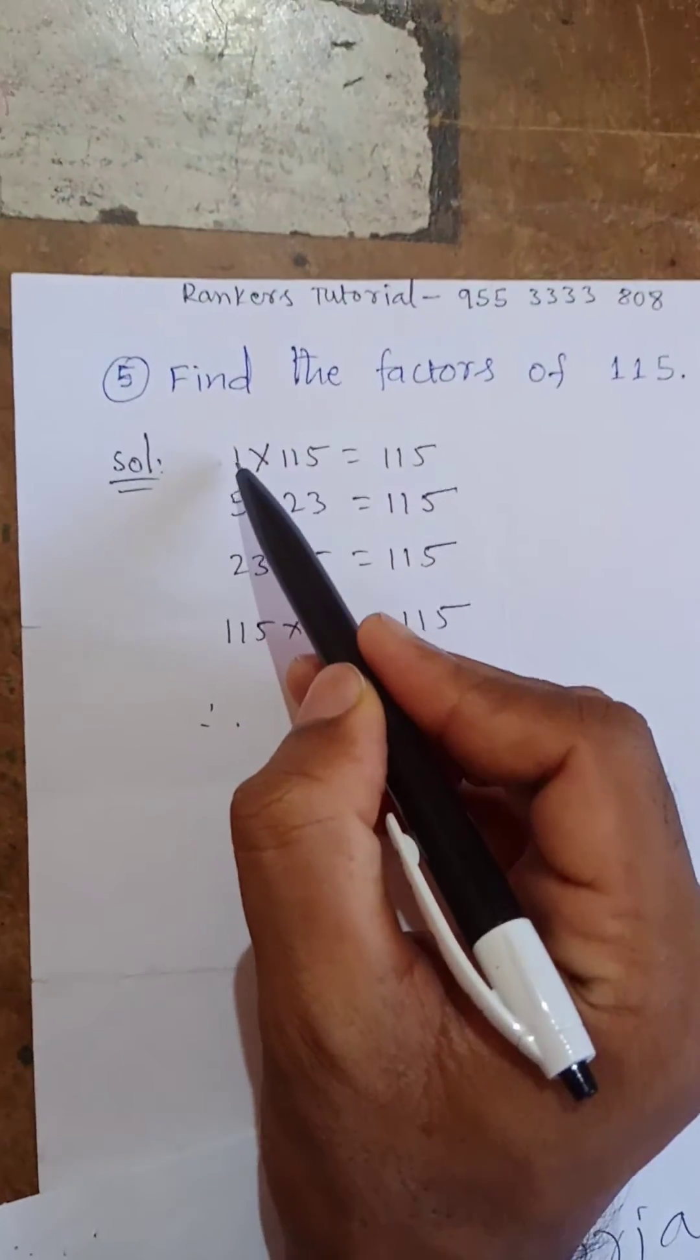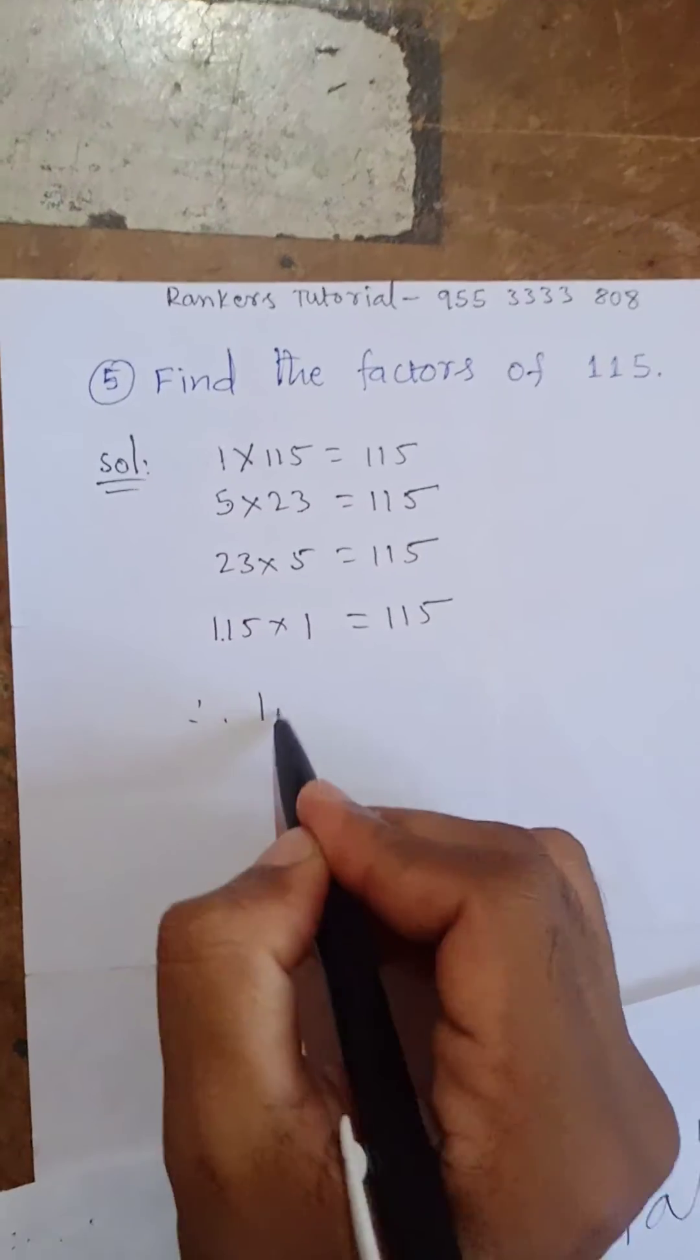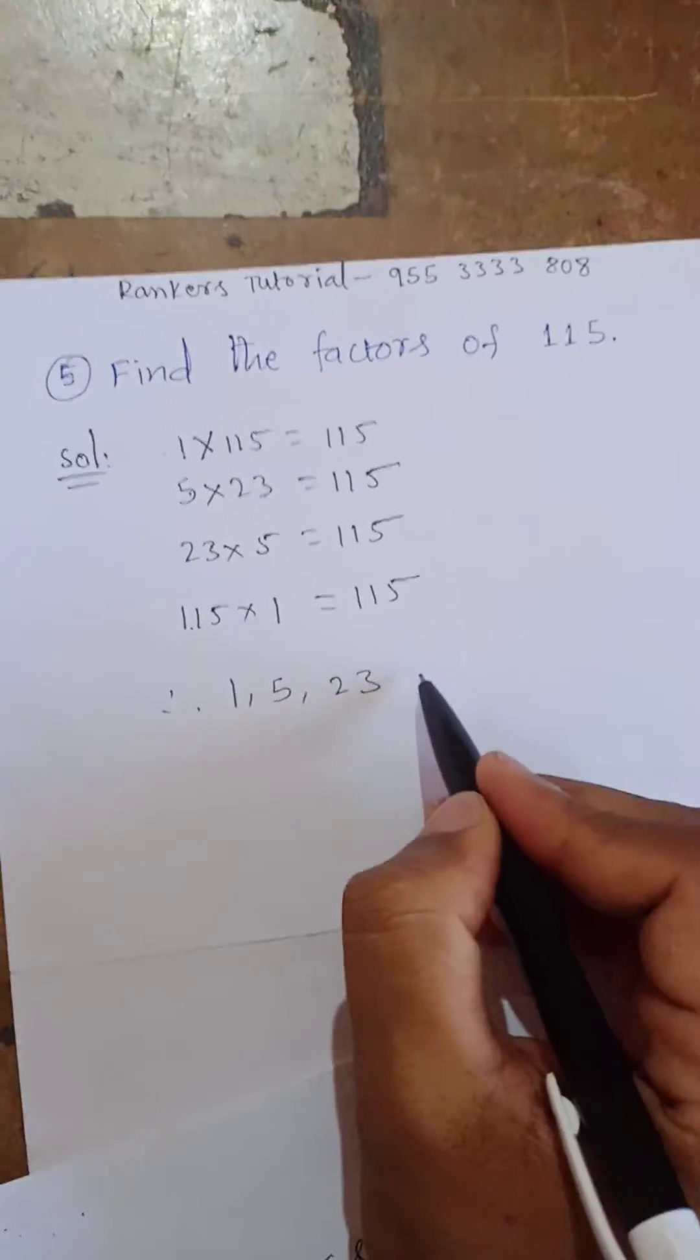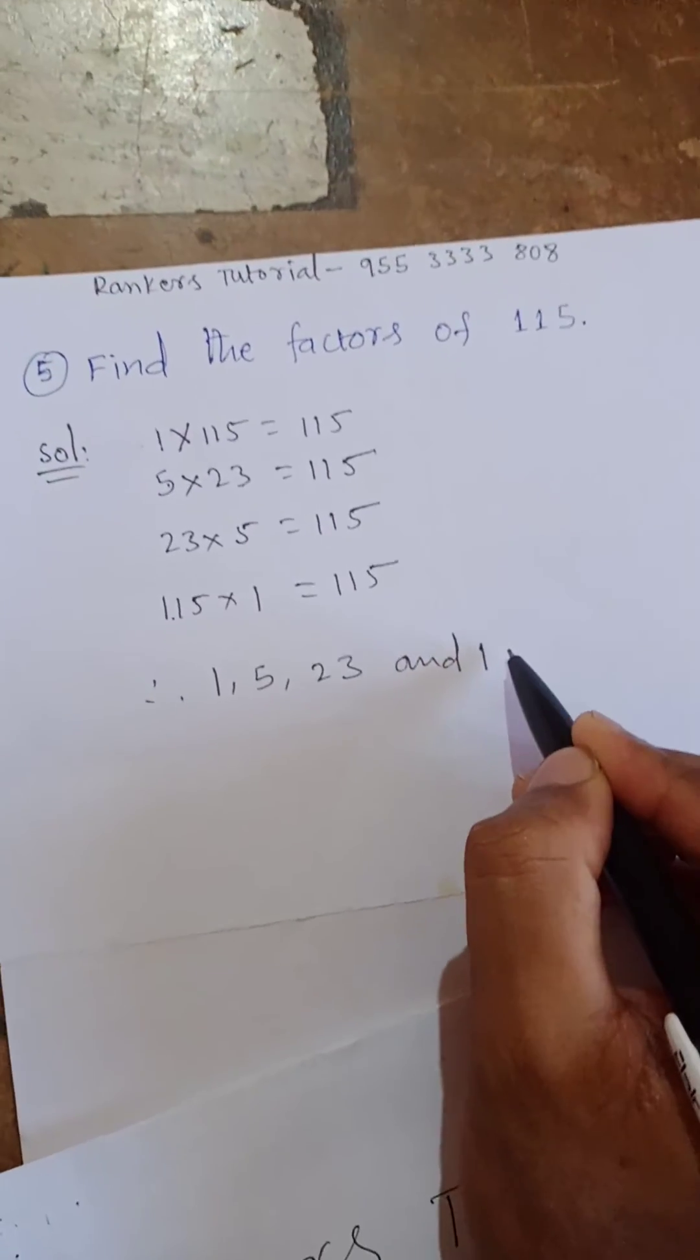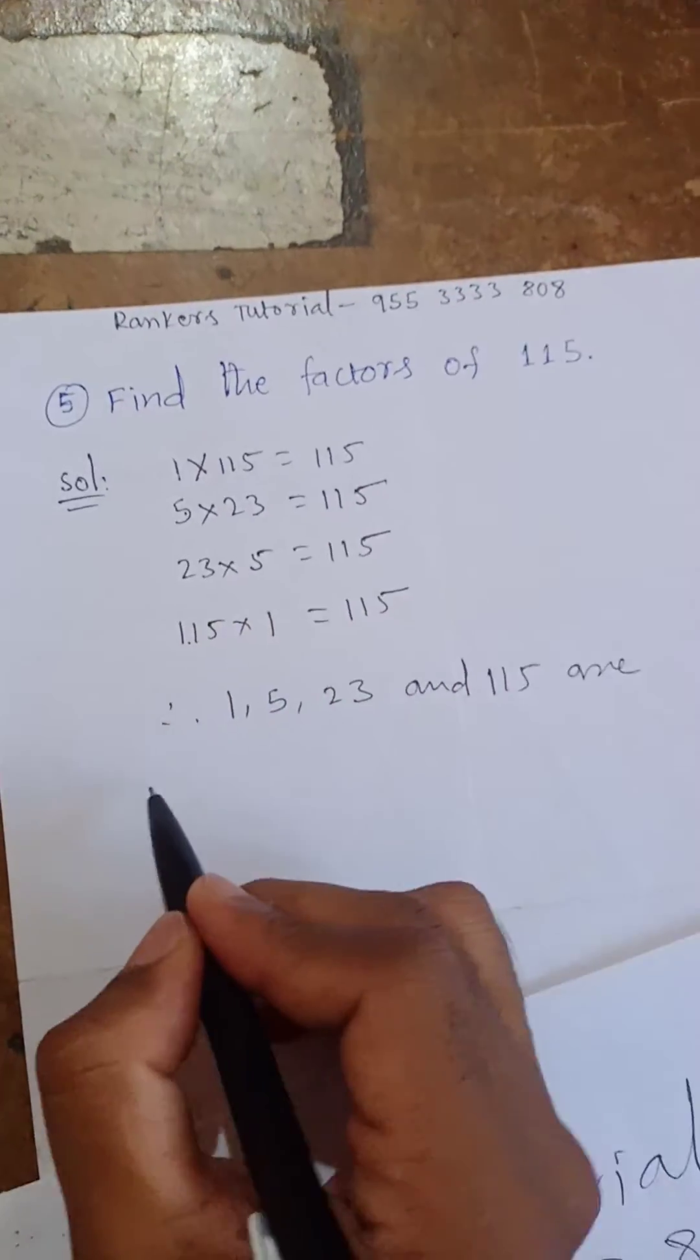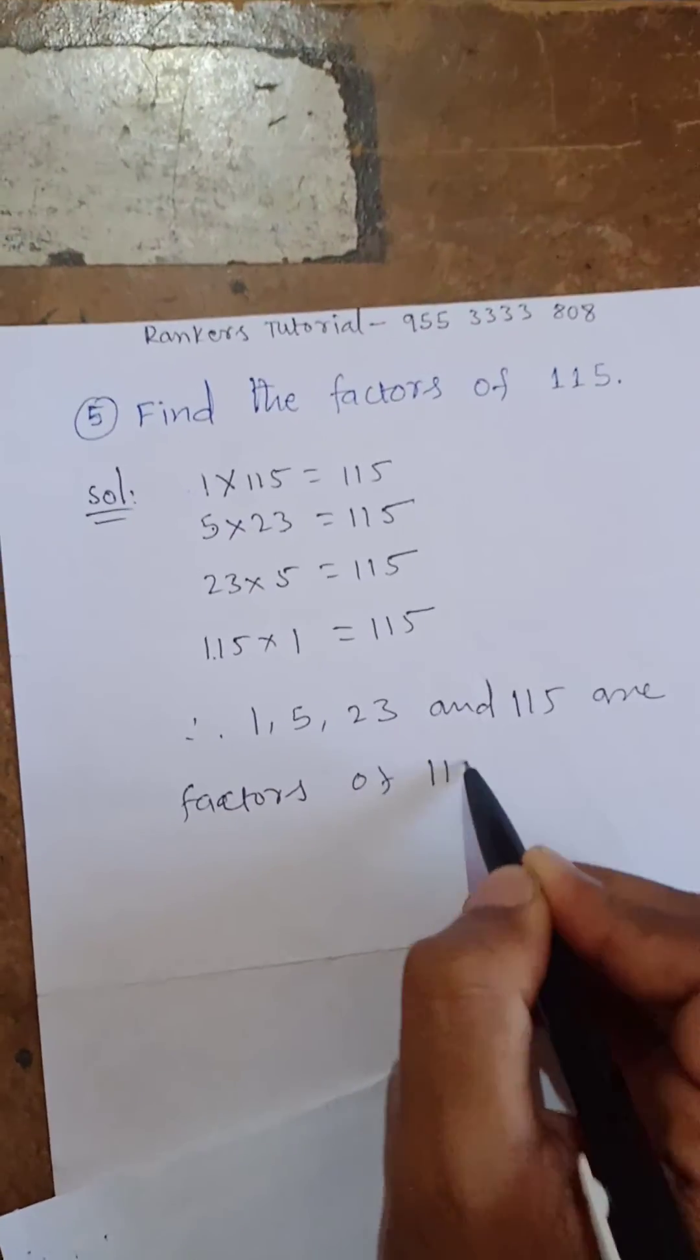Therefore, you write the factors. 1, 5, 23, 115. 1, 5, 23, and 115 are factors of 115.